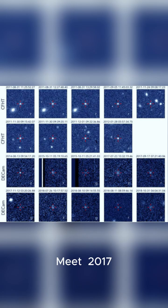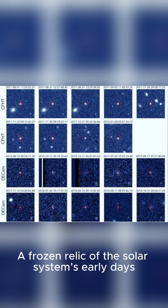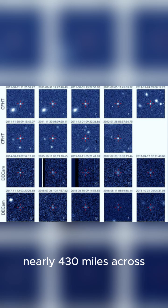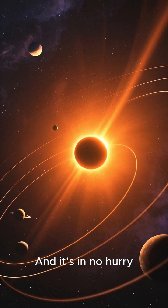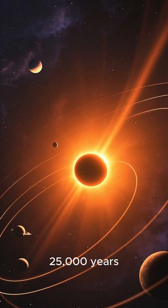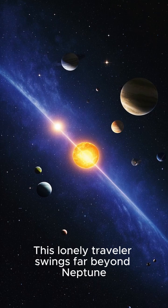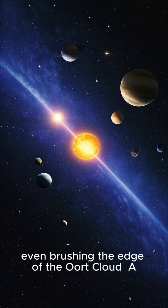Meet 2017 OF-201. It's a dwarf planet, a frozen relic of the solar system's early days, nearly 430 miles across, roughly three times smaller than Pluto. And it's in no hurry. One orbit around the sun takes 25,000 years. This lonely traveler swings far beyond Neptune, even brushing the edge of the Oort cloud.